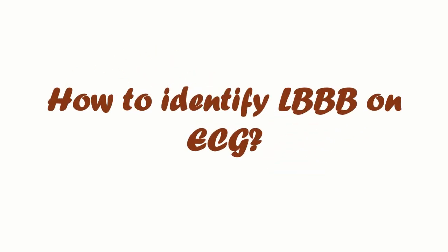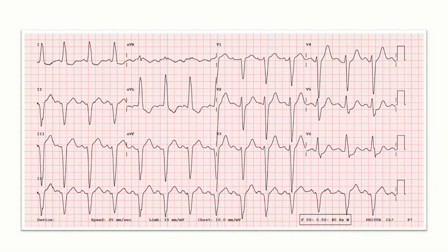Hi, I'm Dr. Nitin. In the previous two videos we learned about various leads on an ECG and also learned the different methods to calculate heart rate in both regular and irregular rhythms. In this video I am going to tell you how to identify left bundle branch block in an electrocardiogram. This is the ECG of a 48-year-old male patient.